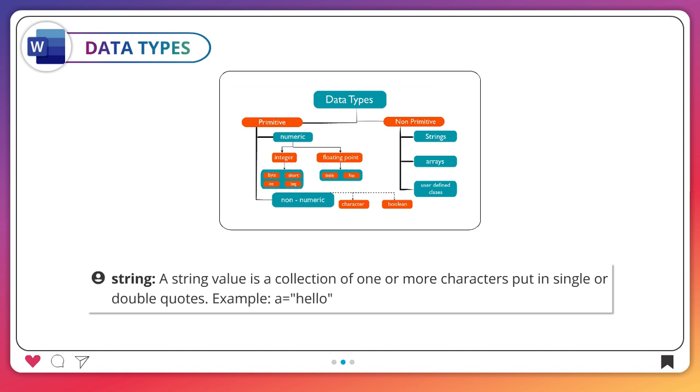String: A string value is a collection of one or more characters put in single or double quotes. Example: a = "hello".